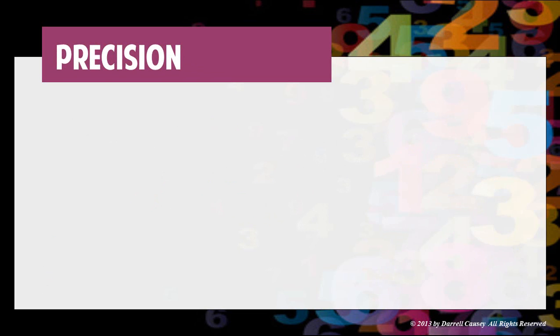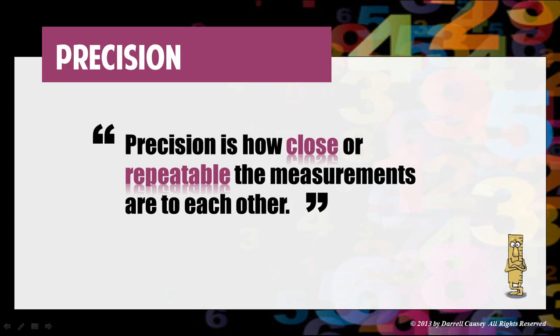And precision? Precision is how close or repeatable the measurements are to each other. So we have a definition for accuracy and we have a definition for precision. An example?